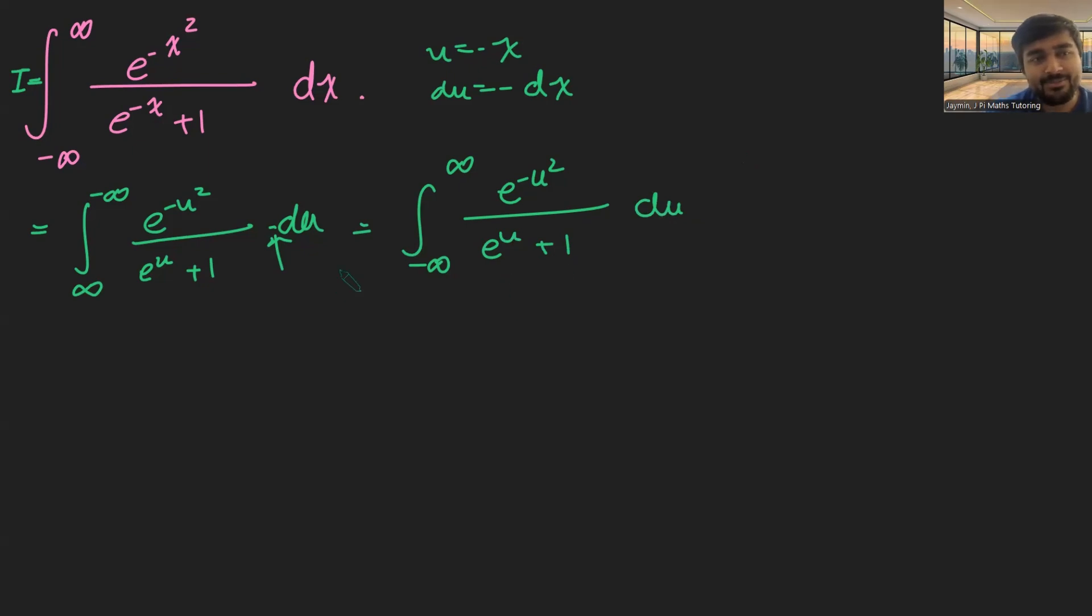And now the trick is I want to kind of relate this back to the original integral. And it looks kind of similar. We've got e to the negative something squared on the bottom, but our denominators are slightly different. So let's kind of force them to be the same.